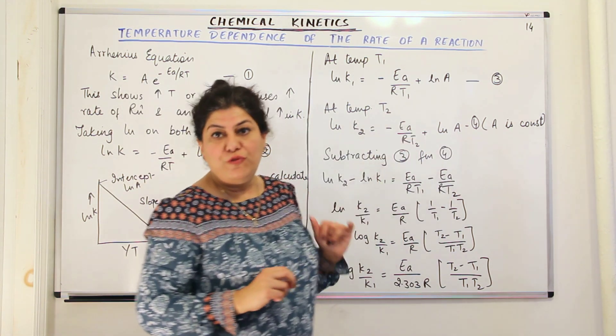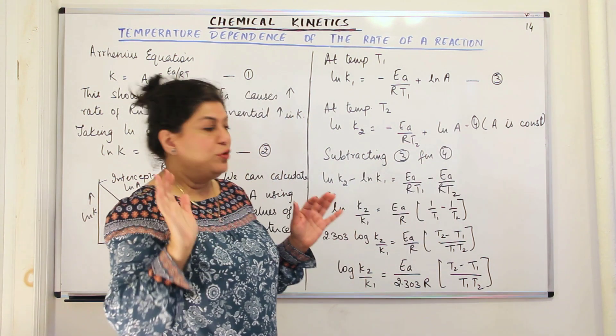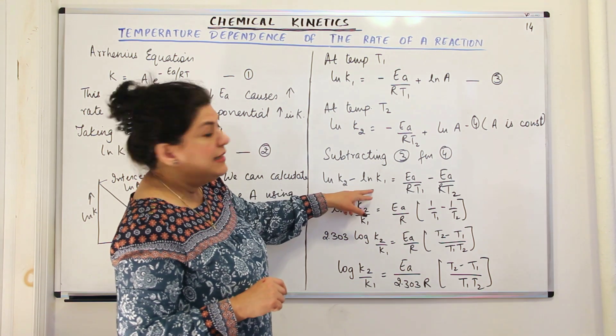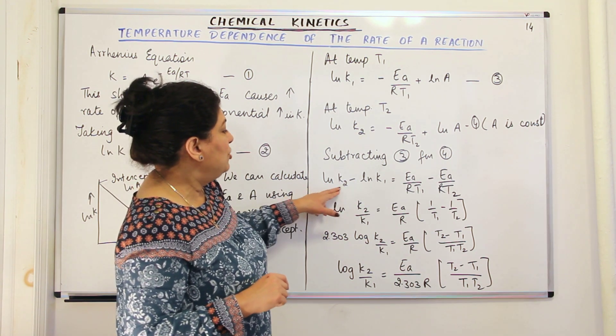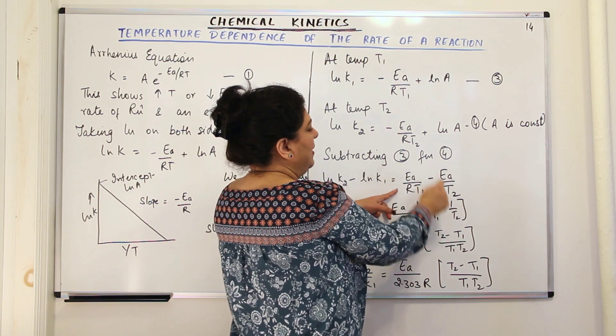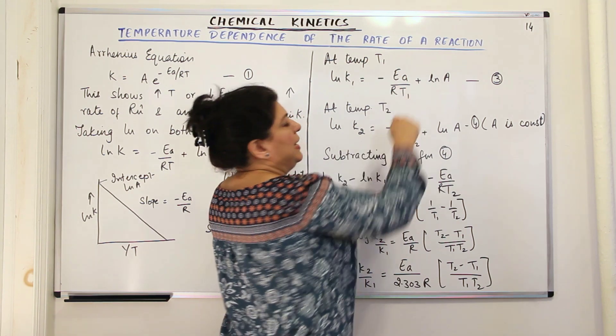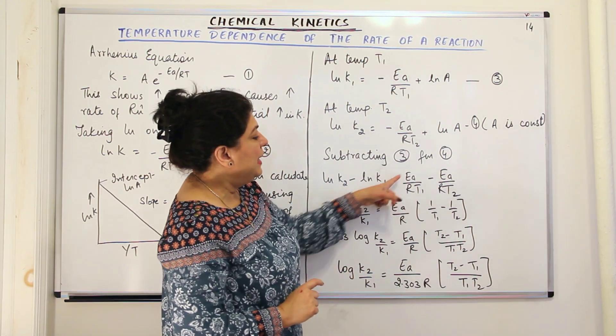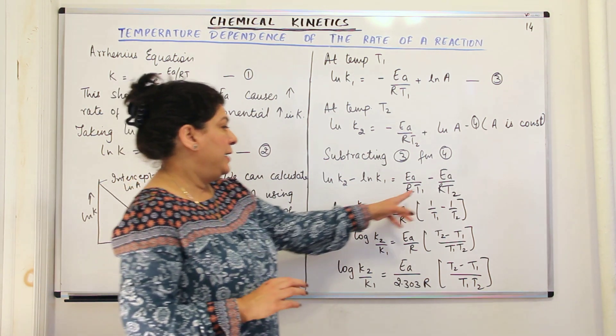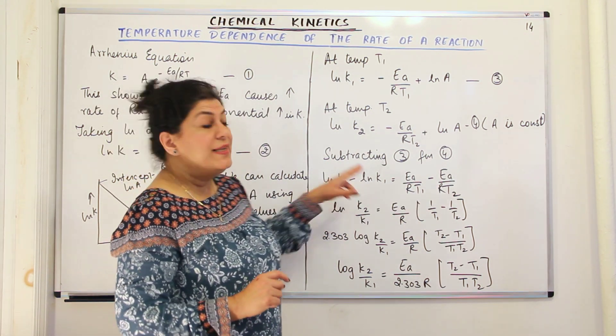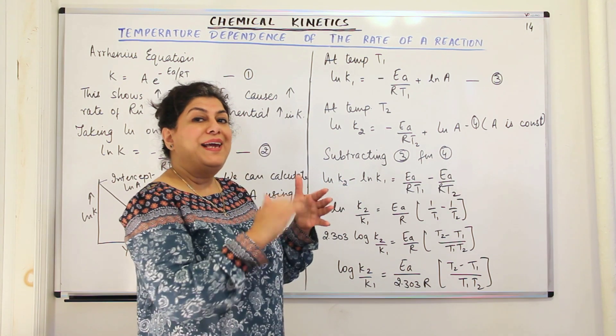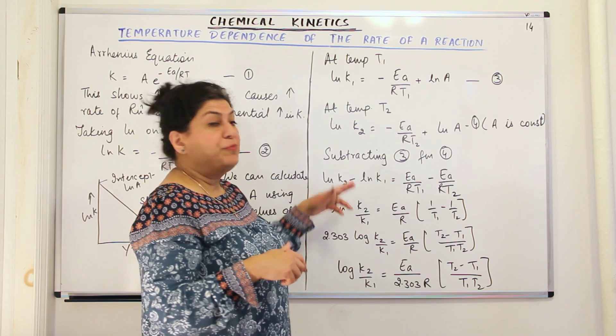So if we subtract equation 3 from equation 4, ln A gets cancelled. So subtracting equation 3 from equation 4, ln K2 minus ln K1 would be equal to, now ln A is cancelled. So minus Ea/RT2 minus minus Ea upon RT1. So minus minus becomes plus, so we will write Ea upon RT1 minus Ea upon RT2. ln K2 minus ln K1 can be written as ln K2 upon K1. Because anything ln multiplication is plus in log and subtraction is division.